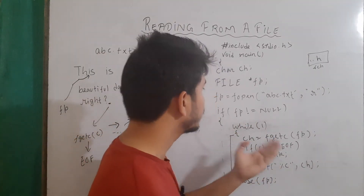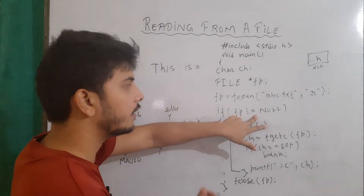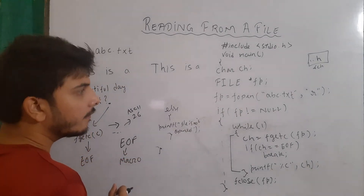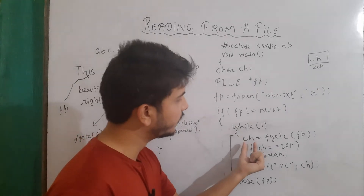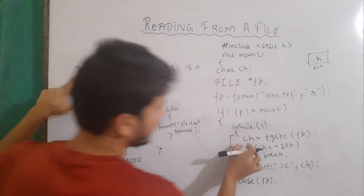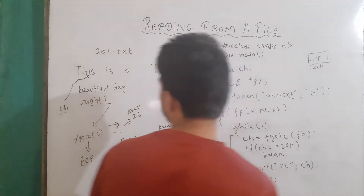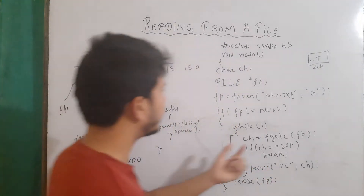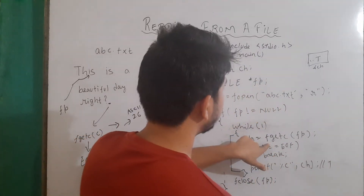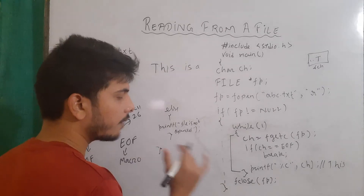The main point is this logic. First, it checks whether fp is null or not. If fp is not null, that means a structure address has been returned. Then fp will be pointing to the first character of the file. We use the infinite loop: in the first iteration, ch equals fgetc(fp), which returns the first character 't' and assigns it to ch. Then it checks if ch equals EOF — checking whether we've reached the end of file. Currently it gives false, so it prints ch, which is 't'. In the next iterations it prints 'h', 'i', 's', and so on.